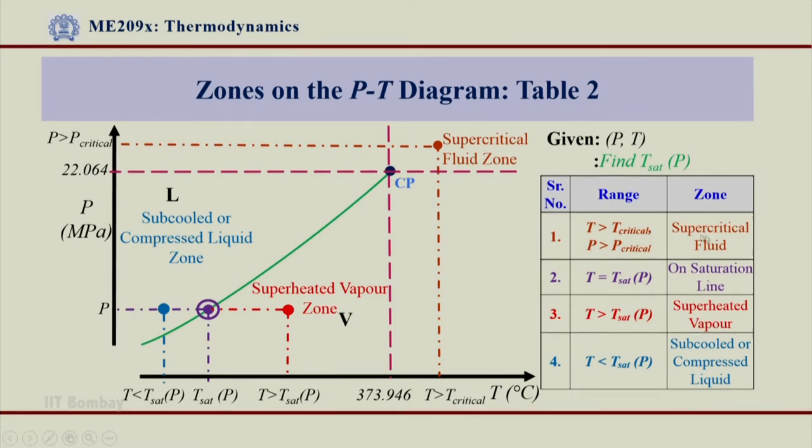So, the first condition is same for supercritical field. If now this T, whatever T has been given, is equal to T-Sat-P we know that it is on saturation line on this LV line. If this temperature is more than T-Sat-P here then you are in superheated vapor zone. If this T happens to be less than T-Sat-P then you are in sub-cooled or compressed liquid zone as simple as that. So, Table 1 and Table 2 could be referred to in this way. What is important to understand: just identify the zone and write in which zone this particular condition lies.